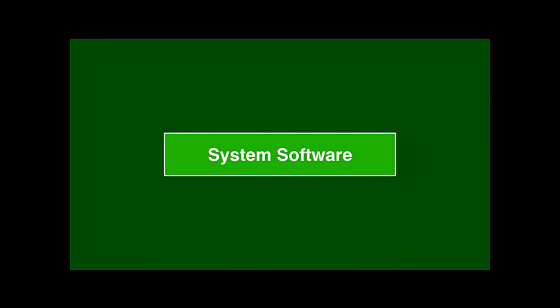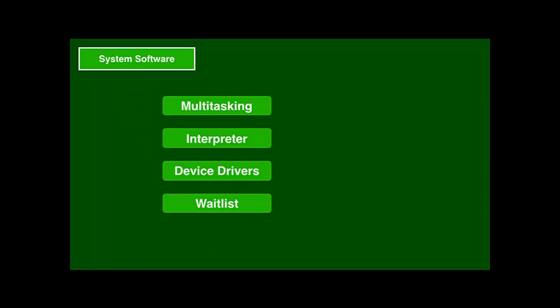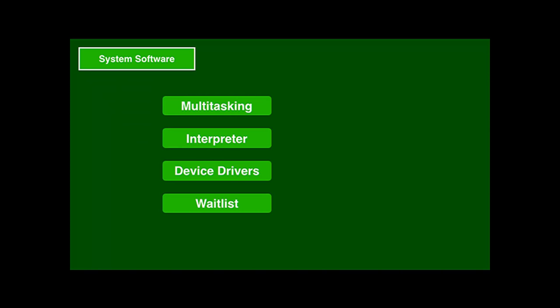The AGC system software makes it a priority-based cooperative but also preemptive, real-time, interactive, fault-tolerant computer with virtual machine support. The topics we'll talk about are multitasking, the interpreter, device drivers, and the wait list, as well as the user interface and mechanisms for fault recovery.